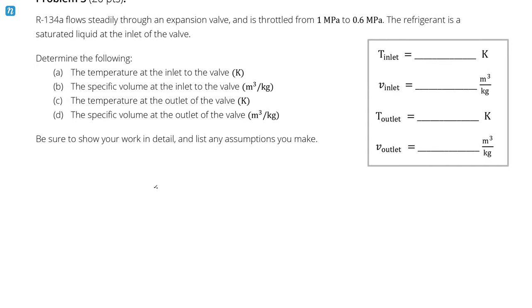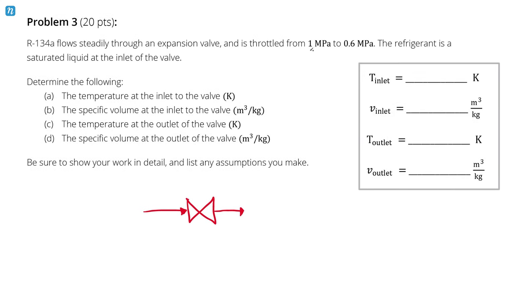So we have an expansion valve. The purpose of the expansion valve is to allow the fluid to expand, which is going to decrease the pressure. And unlike a turbine, there's not going to be any work out. If I call the inlet state 1 and the outlet state 2, then at state 1 I know I have a pressure of 1 MPa, which is 1000 kPa, which is 10 bar, which might be useful later on.